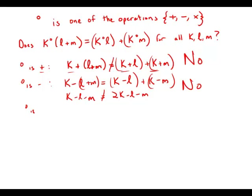If circle is multiplication, well, then k times l plus m, on the other side we have k times l plus k times m. Well, this, in fact, is the distributive law, and this does work for all values of k, l, and m. So, in other words, this equation does work if circle is multiplication.